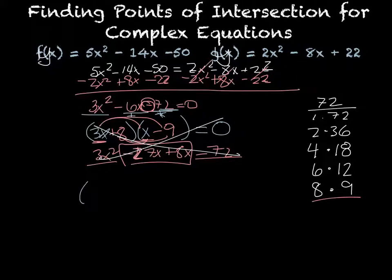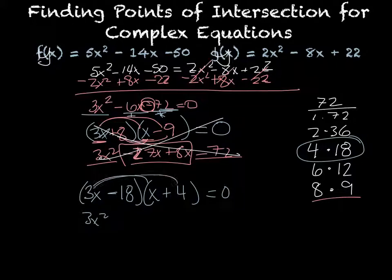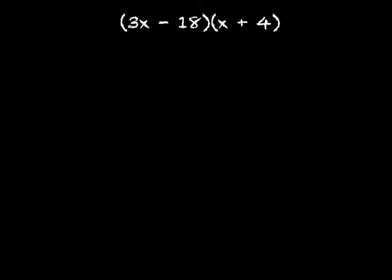Try something else — flip numbers or signs as needed. Picking 4 and 18 gives more difference, which matters because of the 3. Using −18 and +4 (bigger number negative since overall sign is negative), FOILing gives 3x² + 12x − 18x − 72 = 0. Adding the middle terms gives −6x, which is exactly what we wanted. So the correct factoring is (3x − 18)(x + 4) = 0.